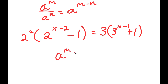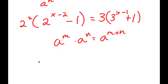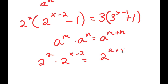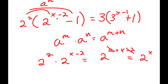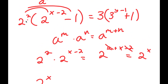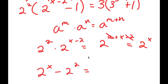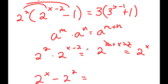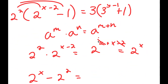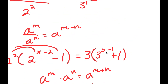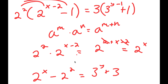Using the rule a to the power of m times a to the power of n equals a to the power of m plus n, I have 2 squared times 2 to the power of x minus 2, which equals 2 to the power of 2 plus x minus 2. The 2 and negative 2 cancel, so I just get 2 to the power of x. And 2 squared times negative 1 is negative 2 squared. This equals 3 to the power of y plus 3. Checking the distribution — it looks correct.